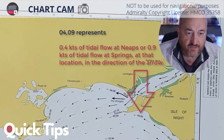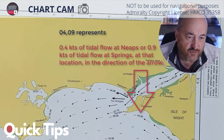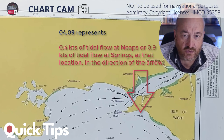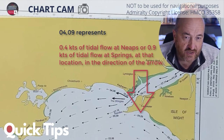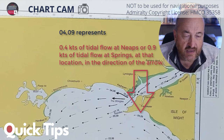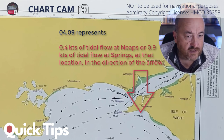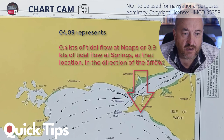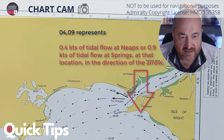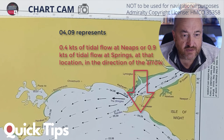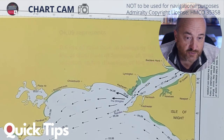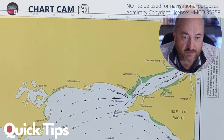To clarify what I was saying about the numbers: we've got 04 and 09, which represents 0.4 knots of tidal flow at neaps or 0.9 knots at springs at that location, flowing in the direction of the arrow. As the tide ebbs and floods, the direction and velocity of the water will change. At springs, where there's a lot more water moving in and out in the same time period, the tidal flow will be stronger. Other locations show 1.6 and 3.2, or 1.4 and 2.8, so you can get all sorts of different tidal stream rates.